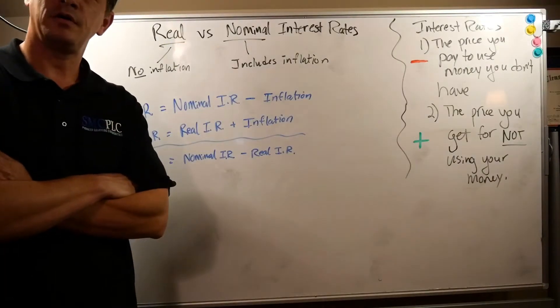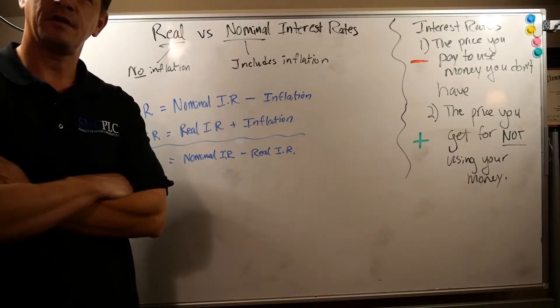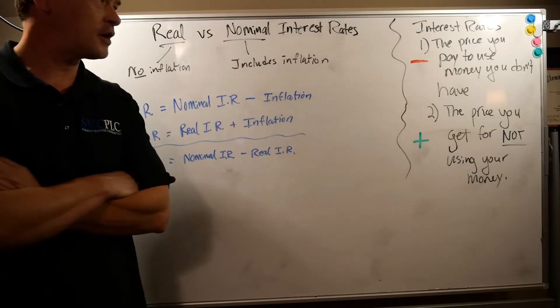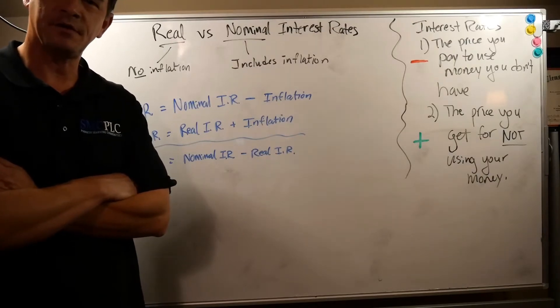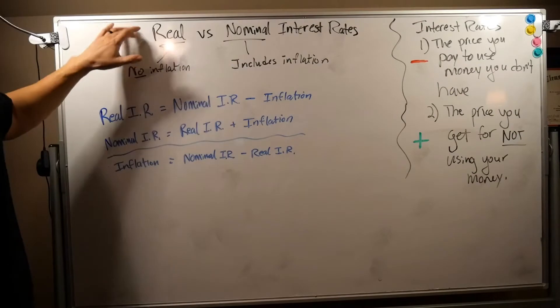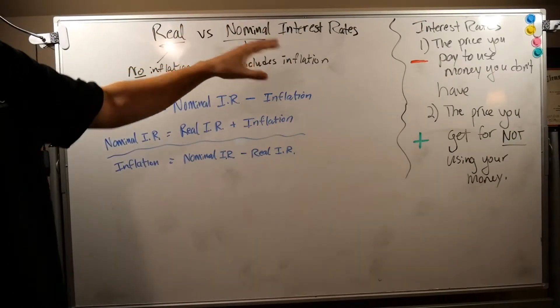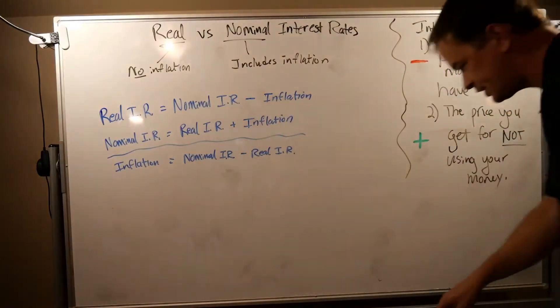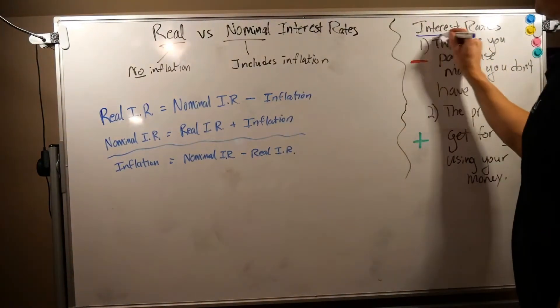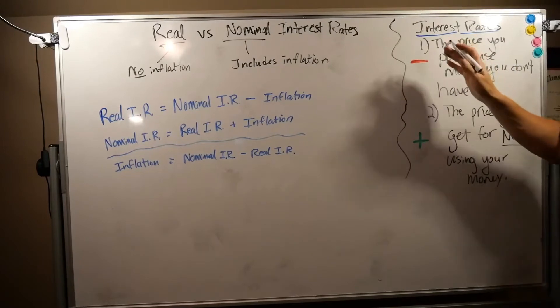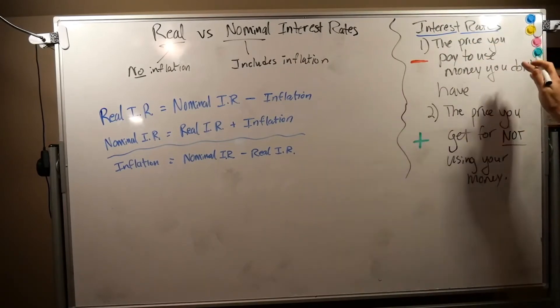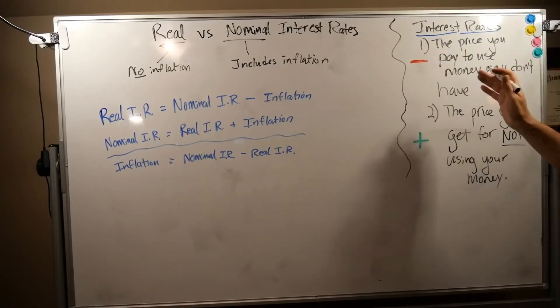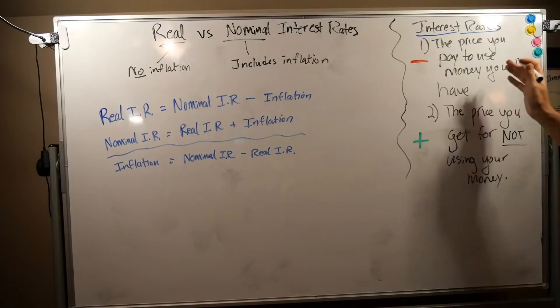Okay, to wrap up chapter 11 looking at the cost of living, we start talking about interest rates a little bit in this chapter, and more specifically real versus nominal interest rates. Let's revisit what interest rates are altogether. Interest rates are essentially two things. First, the price you pay to use money you don't have, like credit cards.